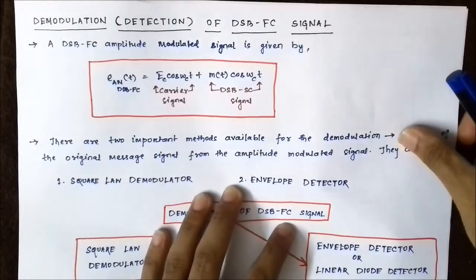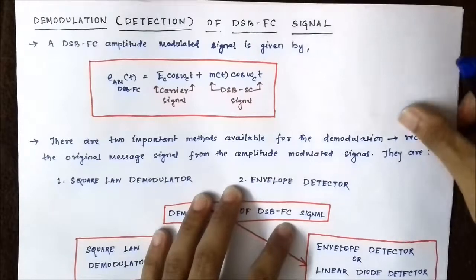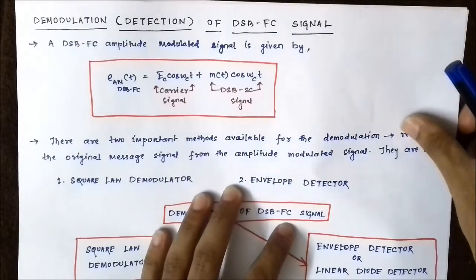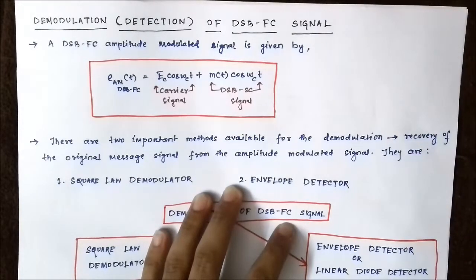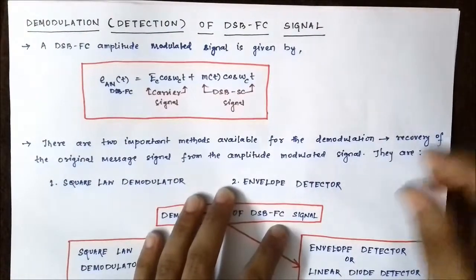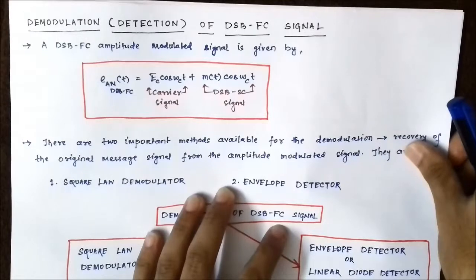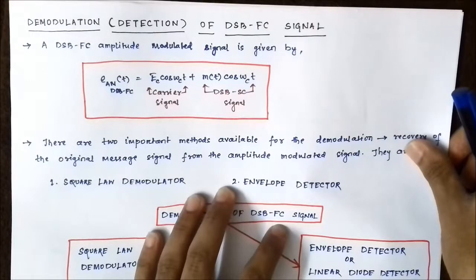Hello friends, welcome to Engineering Tutorial. In my previous few videos, I discussed about the methods of generation of double sideband full carrier amplitude modulated signal. We discussed two such methods for generation of a DSB-FC signal: the square law modulator and the switching AM modulator. In the next set of videos, we will be discussing about the demodulation or the extraction of the message signal from a double sideband full carrier signal.